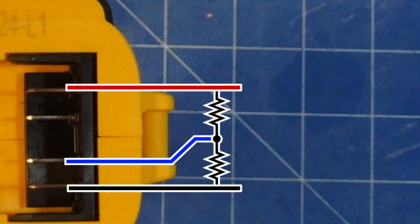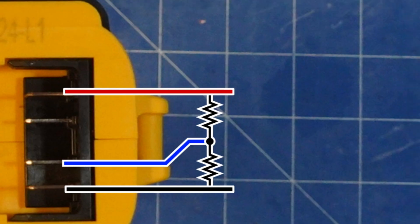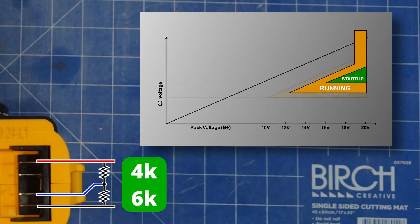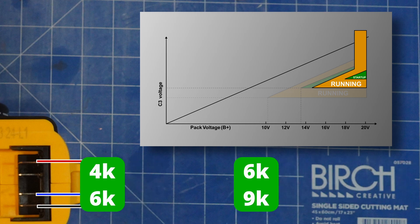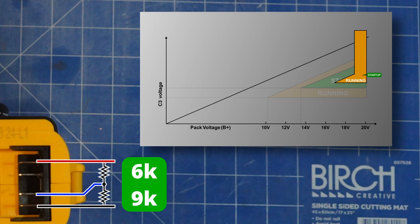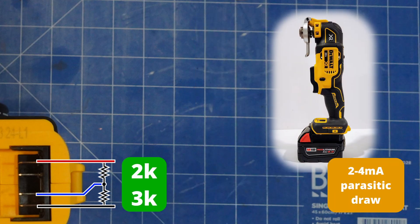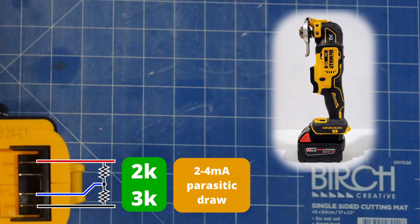The C3 voltage limits go a bit wacky if you try to trick it with a voltage divider. A 2k, 3k divider shrinks the upper and lower limits by around one volt. 4k, 6k shrinks it another volt and by 6k, 9k it's effectively impossible to start the tool. I'm guessing most adapters for DeWalt tools use something around 2k, 3k which is going to give you 2 to 4 milliamps of parasitic draw.